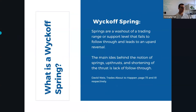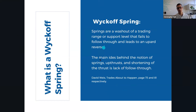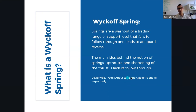What is a spring? It's described as a washout of a trading range or support level that fails to follow through and leads to an upward reversal. The main idea behind springs, up thrusts, and shortening of the thrust is lack of follow through — that's really what we're looking for at a base or support line. These come from David Weiss's book, Trades About to Happen, on pages 73 and 81 respectively. A great book indeed.